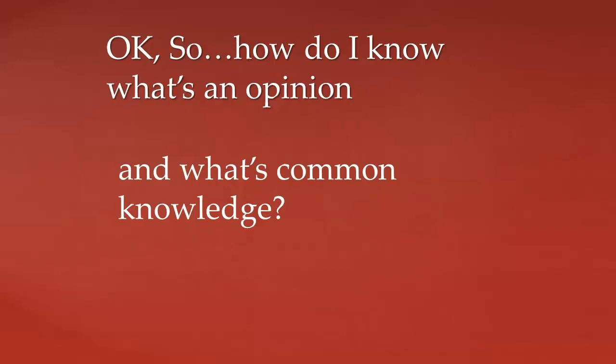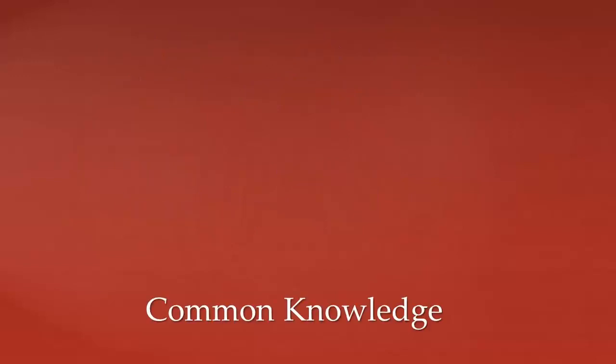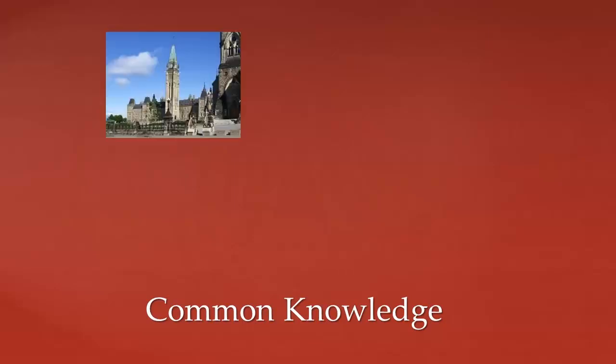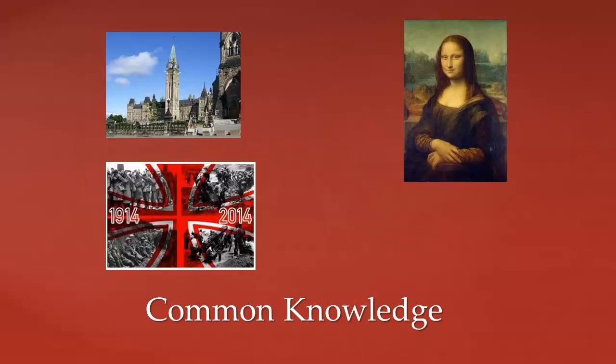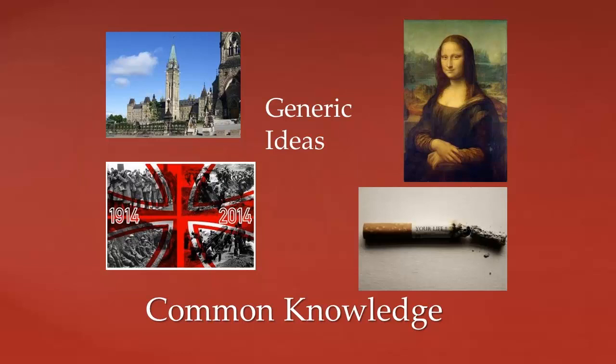Okay, so how do I know what's an opinion and what's common knowledge? Common knowledge is a fact. So, for example, if you said the capital of Canada is Ottawa, or that the Mona Lisa was painted by Leonardo da Vinci, or that World War I began in 1914, or that smoking is harmful, you wouldn't need to provide a reference. It's easily verified or taken for granted. You need to start referencing when you move away from these generic ideas to ones that identify the author's position in some way. So if it's someone else's idea, you need a reference.